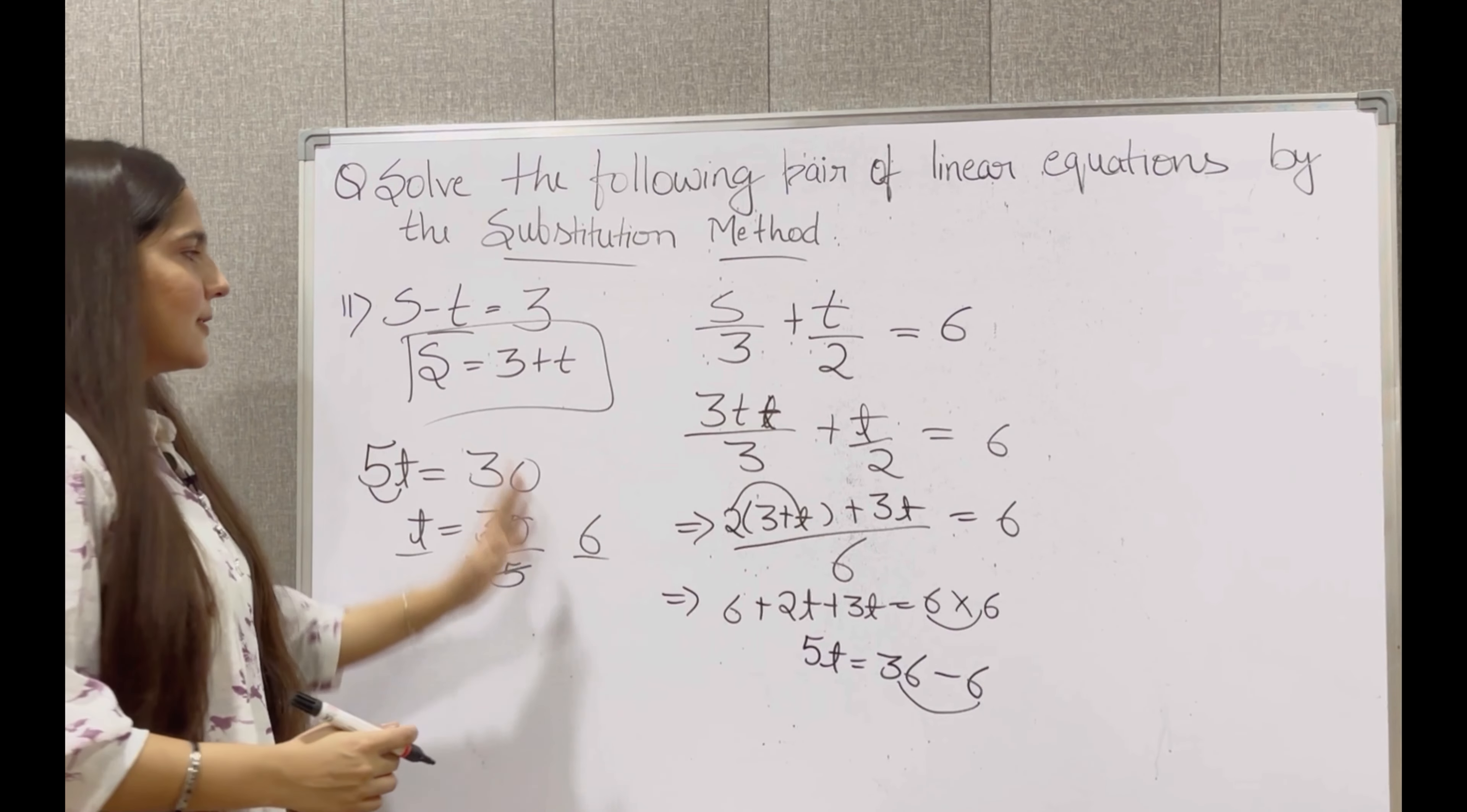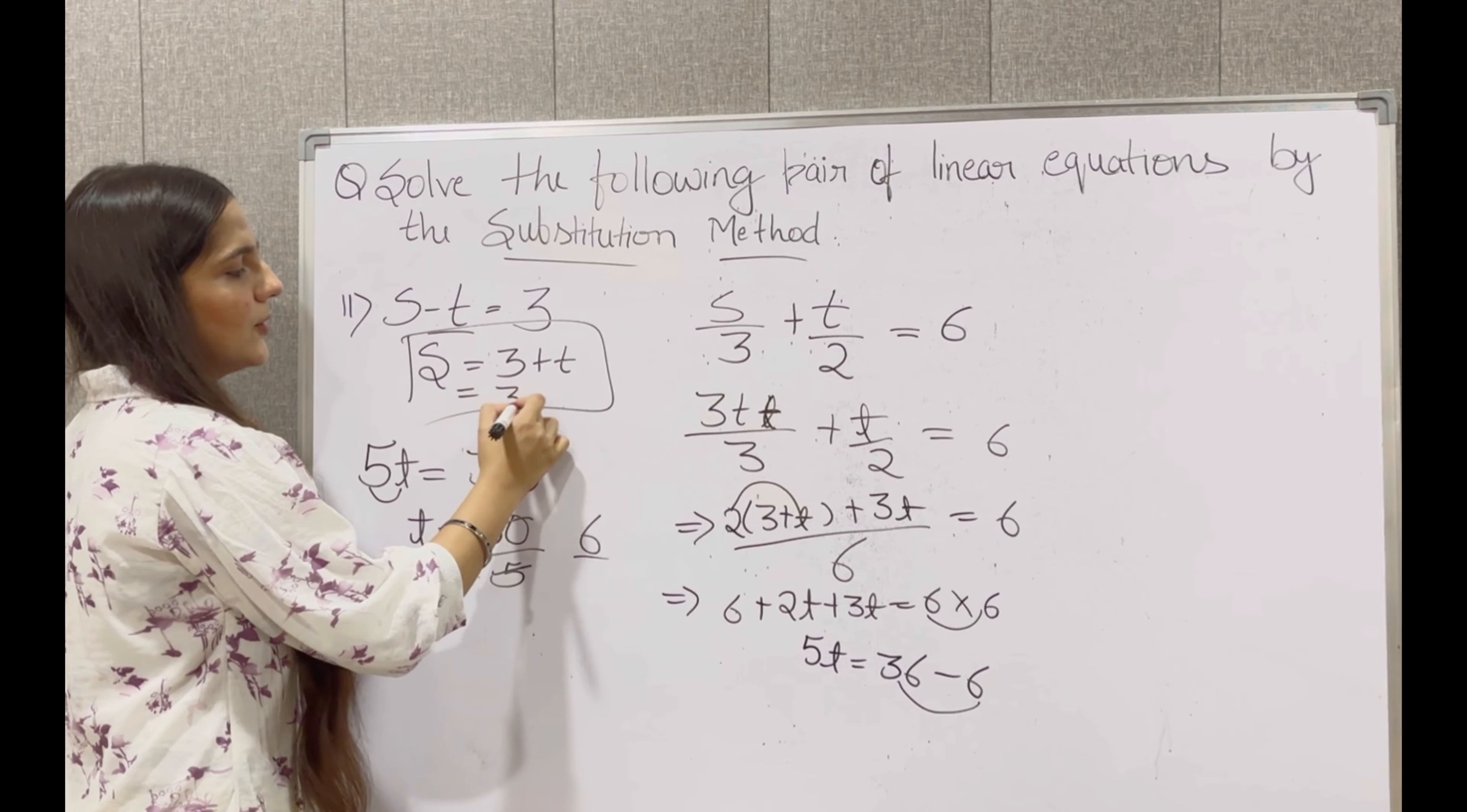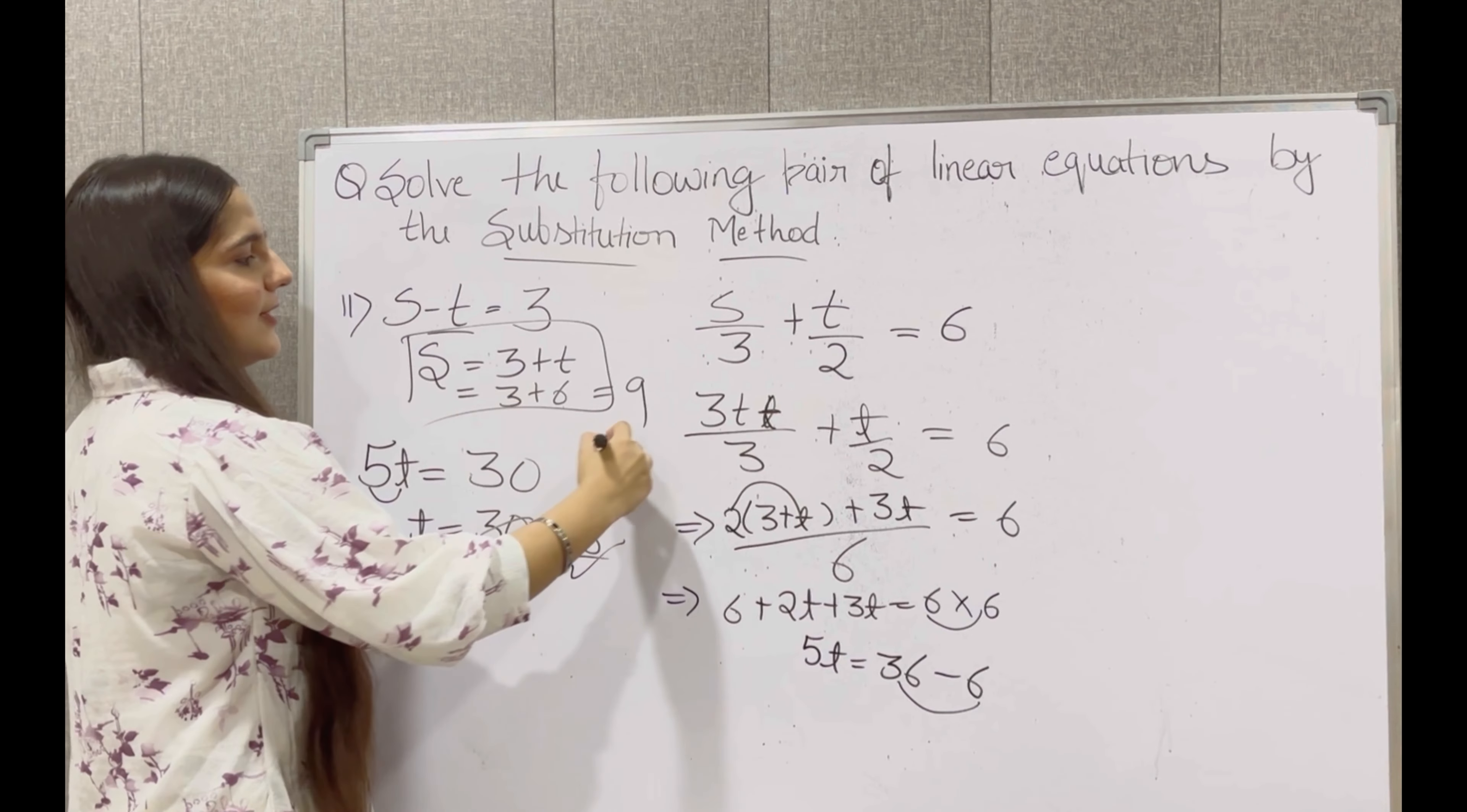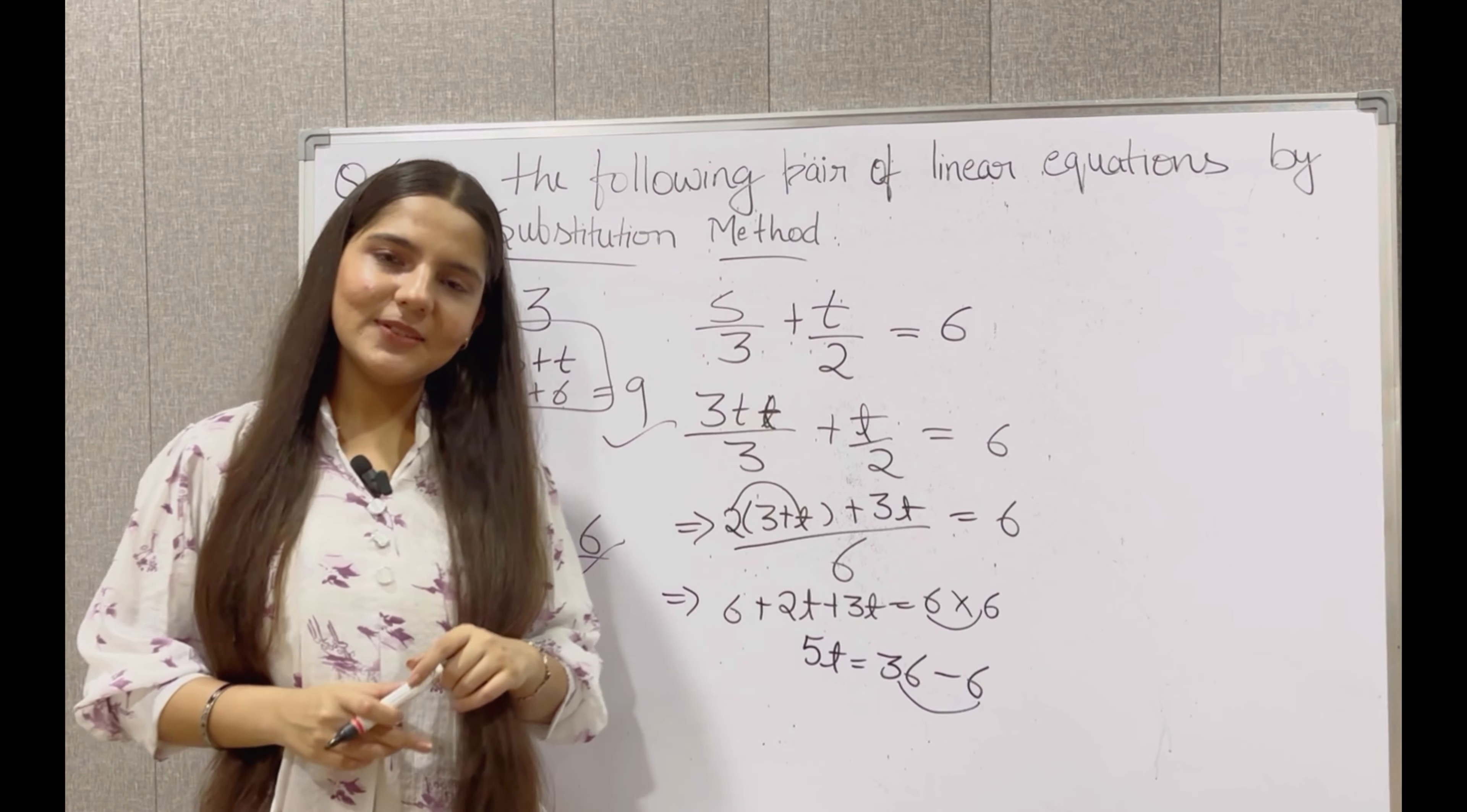So t is equal to 30 divided by 5 which gives us 6. So value of t is 6. So s's value, find it, 3 plus 6 that is 9. So value of t is 6 and value of s is 9.